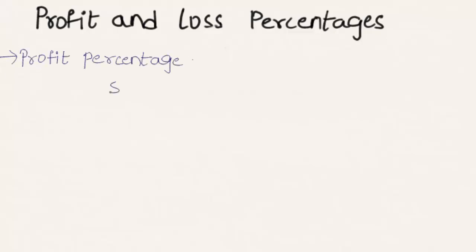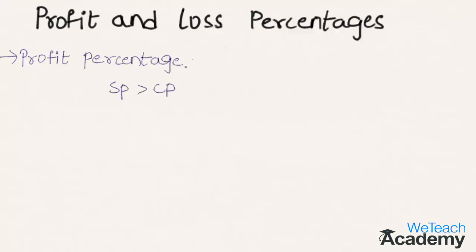When selling price is greater than the cost price there is a profit, and the profit percentage is given by the formula: profit divided by cost price, multiplied by 100.